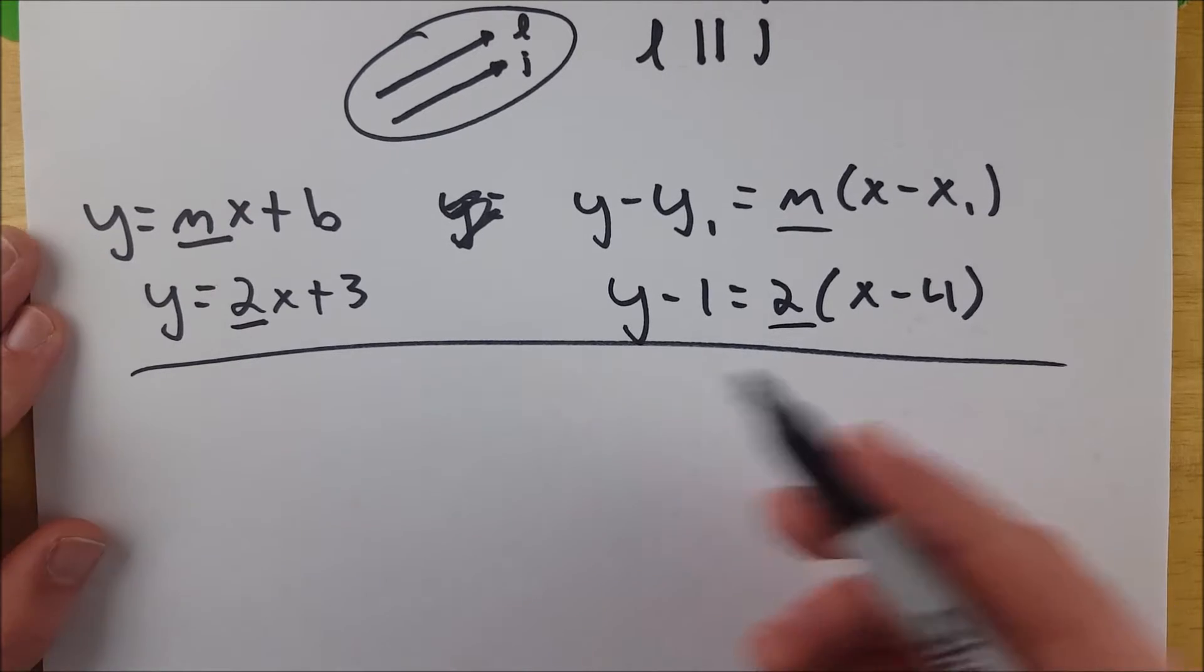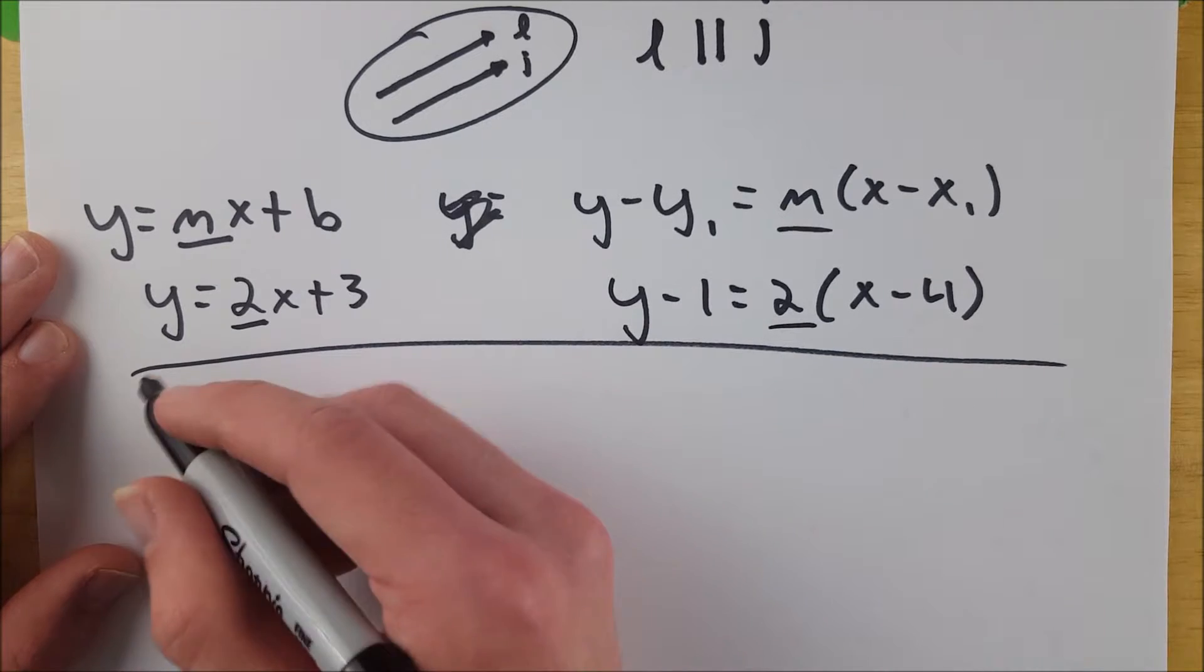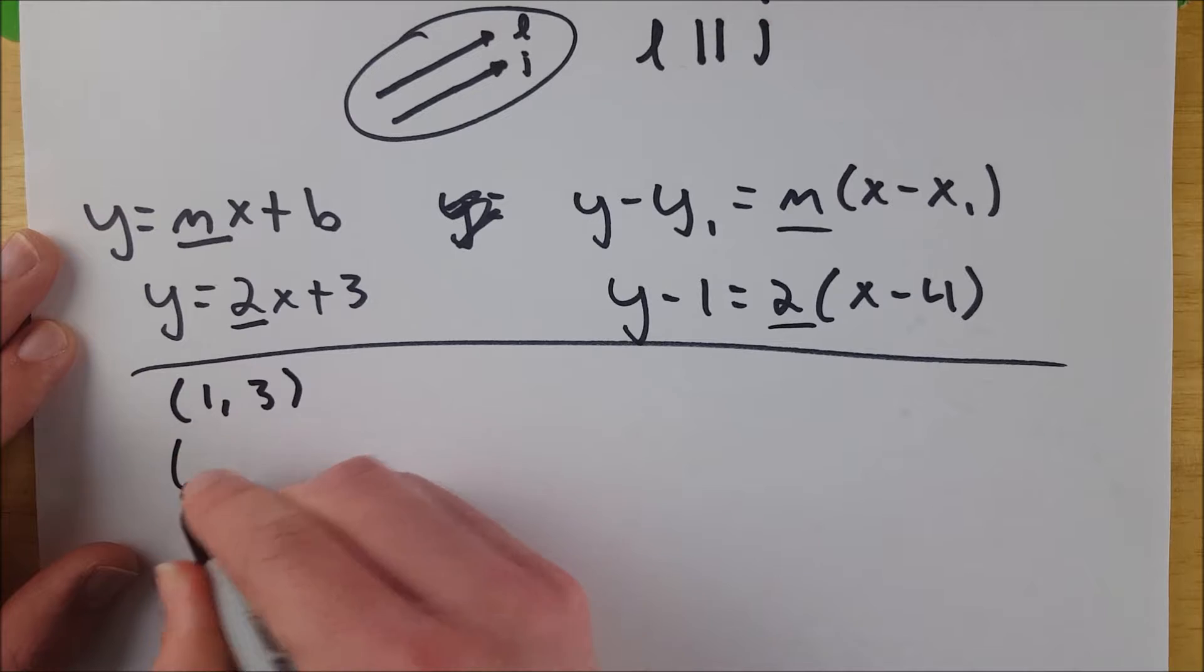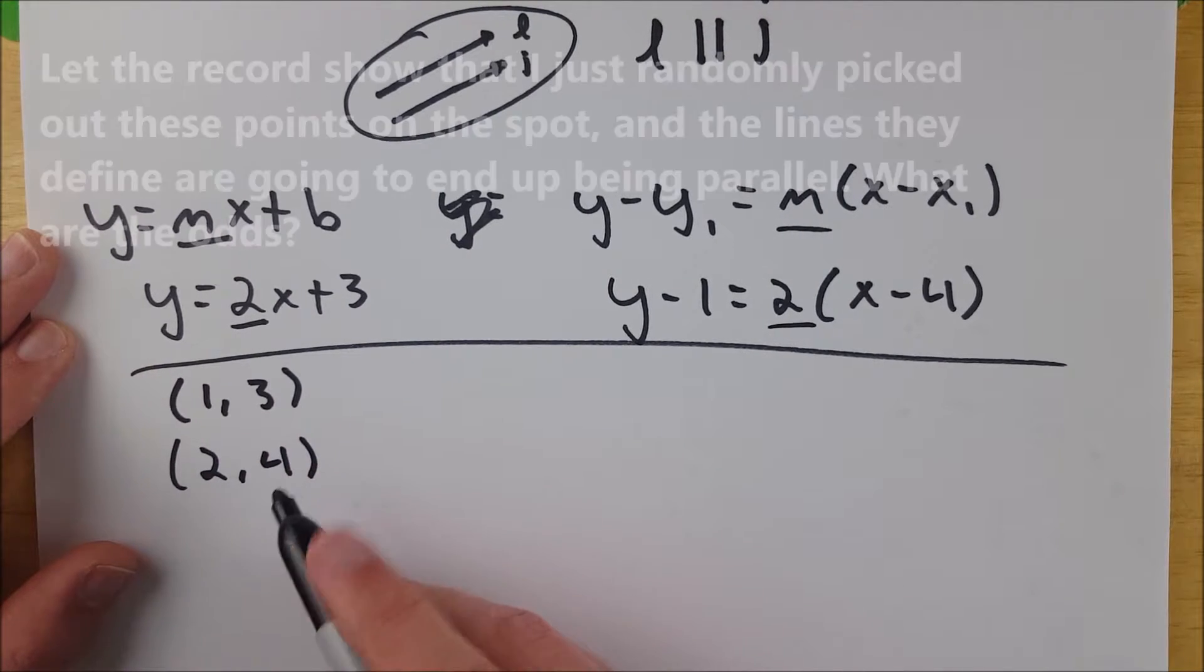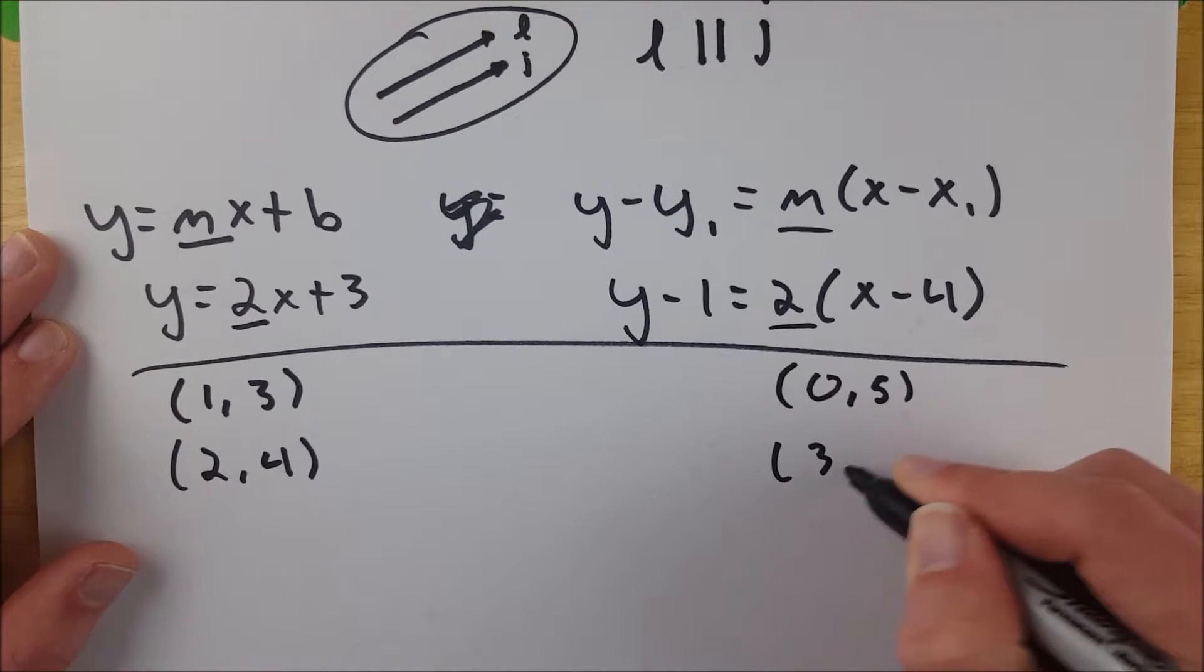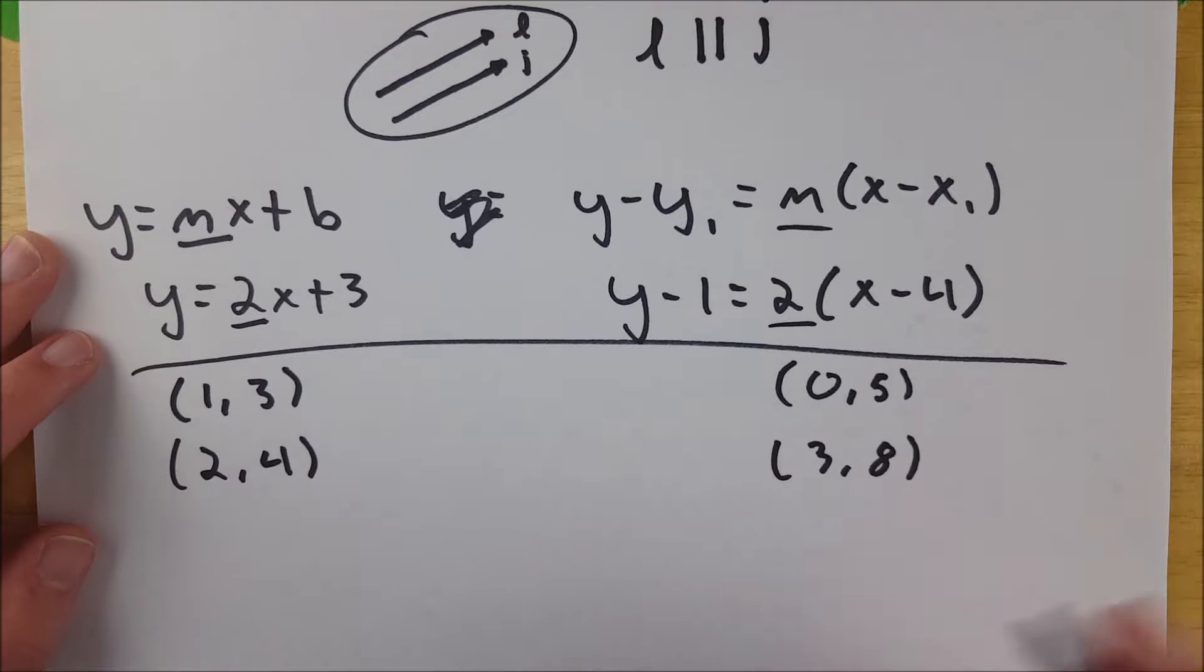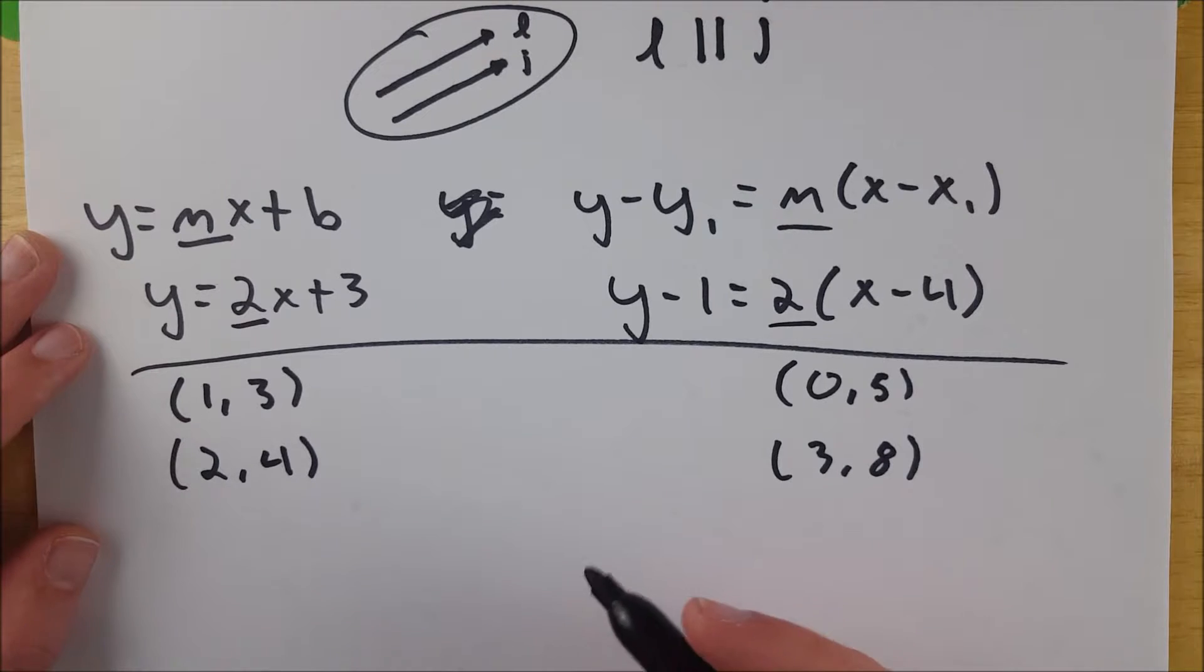The slightly harder way, but still not all that difficult, is if you've got two points on each line. So let's say we have one line that has point (1,3) on it, and it also has the point (2,4). If we know one line has these two points, and another line has points (0,5) and (3,8), then to figure out if these two lines are parallel, all we have to do is plug these points into the slope formula so we can figure out the slope just by calculation for each line.